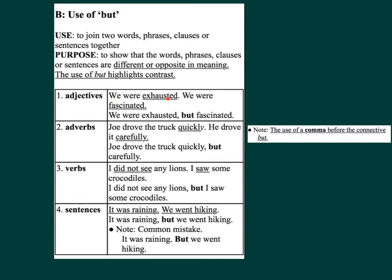Number one, adjectives: 'We were exhausted but fascinated.' Number two, adverbs: 'Joe drove the truck quickly but carefully.' Number three, verbs: 'I did not see any lions but I saw some crocodiles.' Number four, sentences: 'It was raining, but we went hiking.' Note — common mistake: 'It was raining. But we went hiking.' Note the use of a comma before the connective BUT.